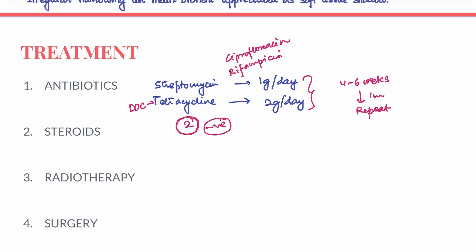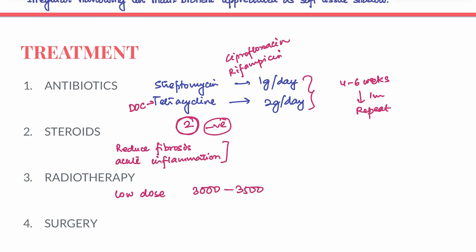Steroids help in reducing the fibrotic features as well as the acute inflammation occurring in this disease. Radiotherapy uses a low dose of 3000 to 3500 rads per three weeks, used only in very advanced, resistant cases that have not responded to medical management. However, radiotherapy will not cure the disease — it will only halt its progression.